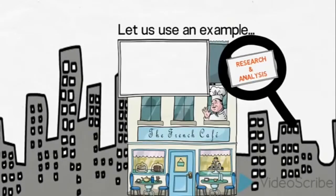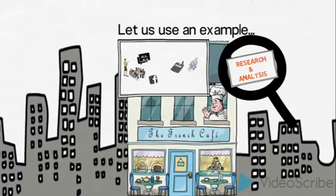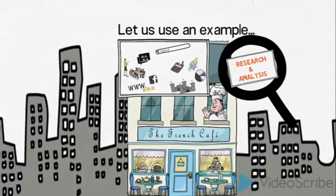Here is a short summary of the types of research and analysis the French Café have carried out. They have spoken to customers and suppliers. They have analyzed their financial accounts and their online presence and interactions in detail. And they have also investigated their competitors. During the process they have collected vast amounts of data, both qualitative, quantitative, primary and secondary.